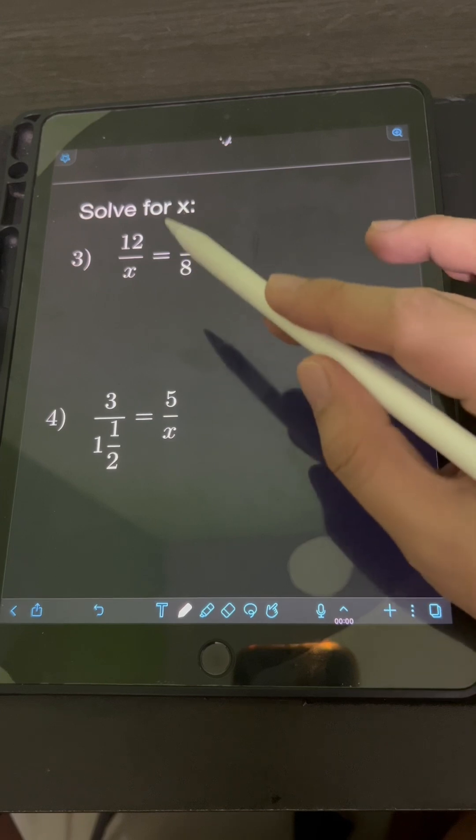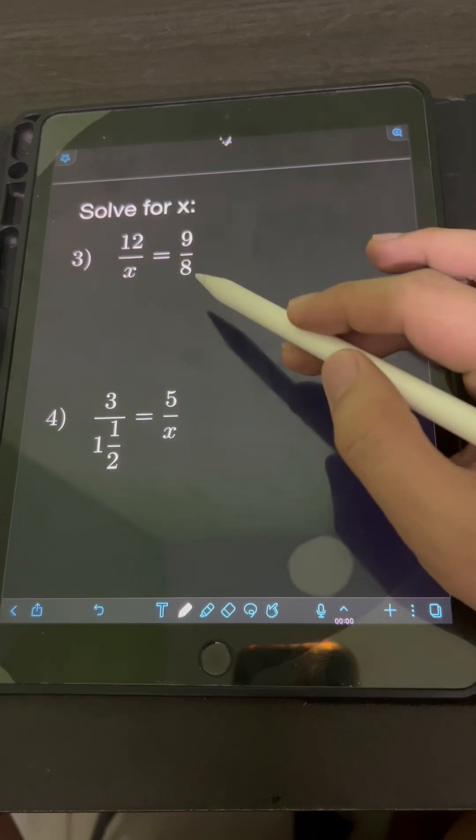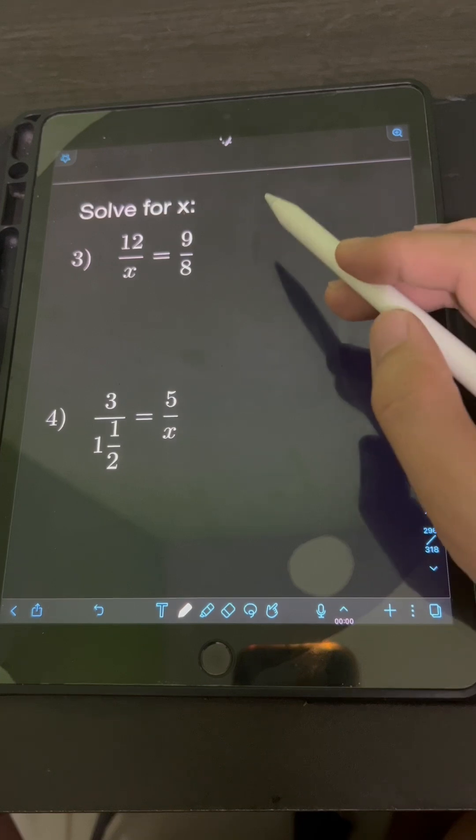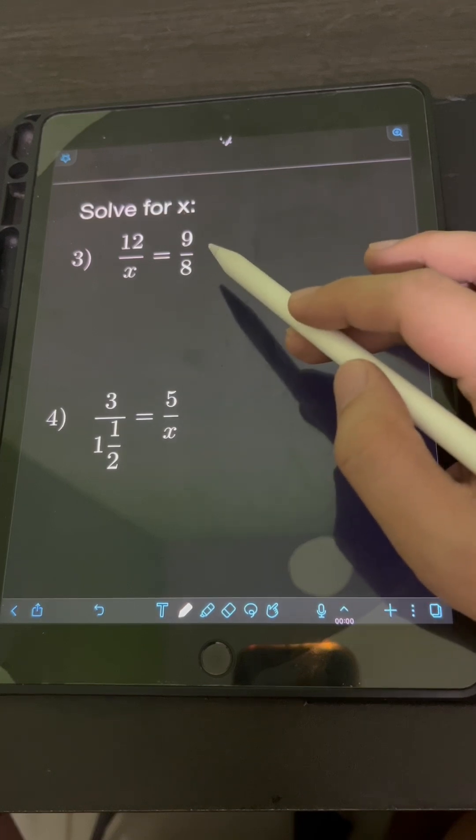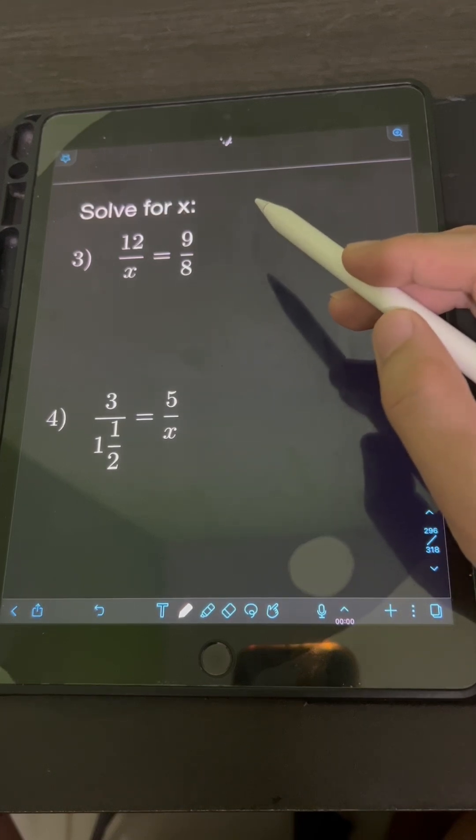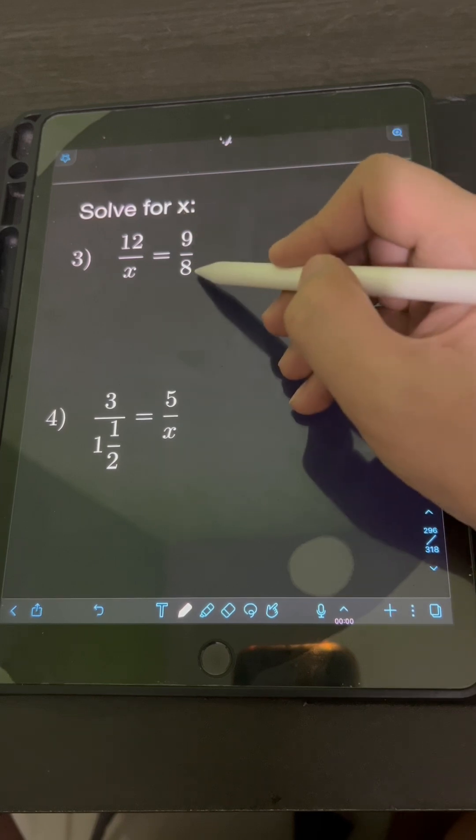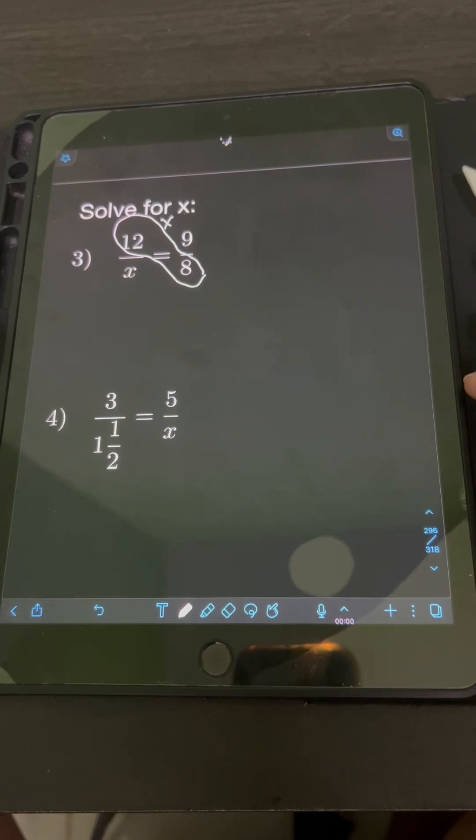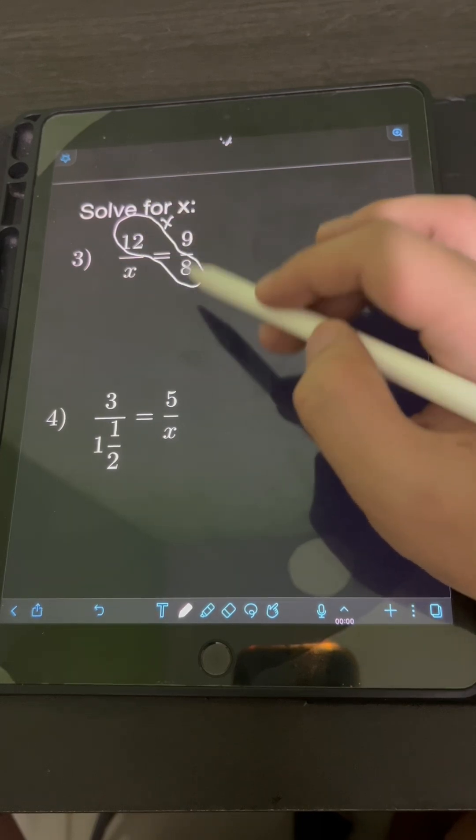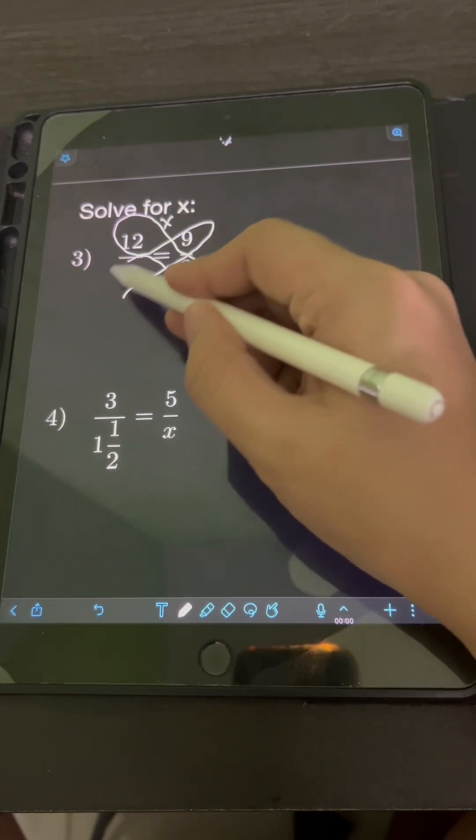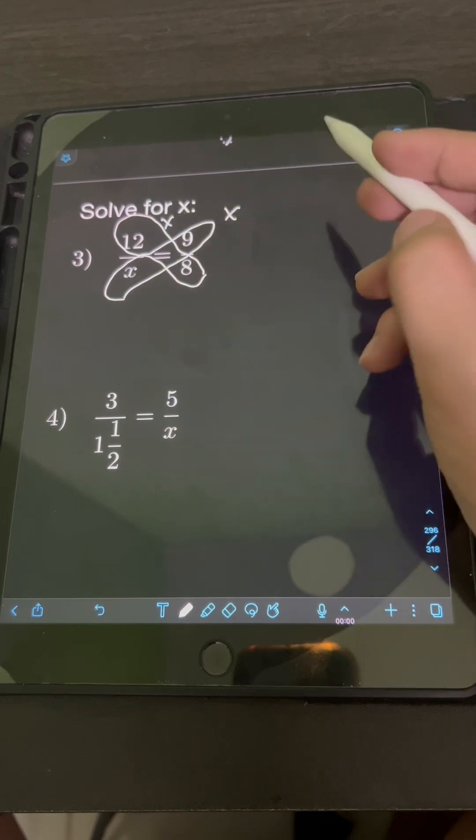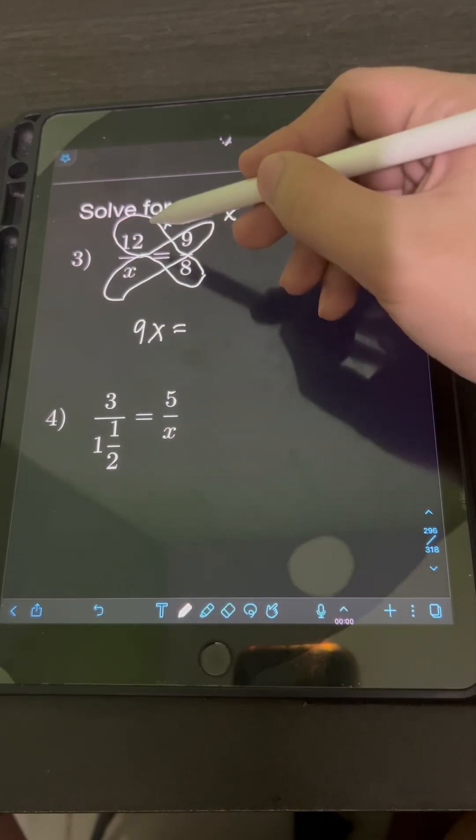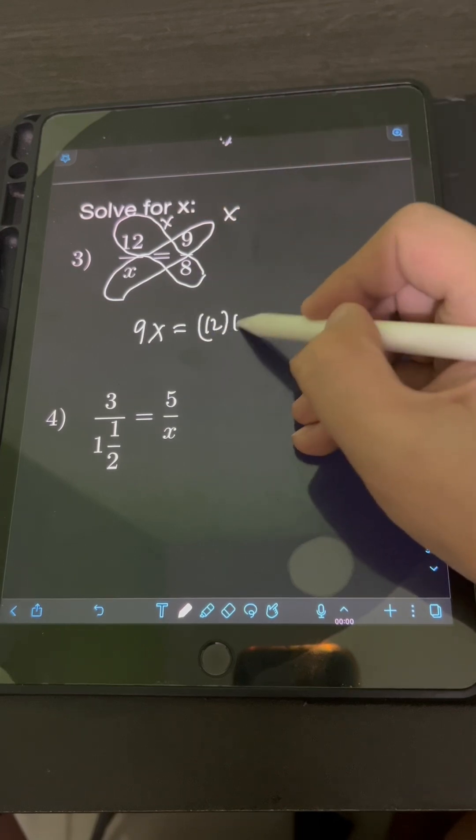For number 3, we have 12 over x is equal to 9 over 8. So this is also considered a ratio and proportion written in fraction. So this time, we just apply cross multiplication. So we equate the cross product of 12 and 8 to the cross product of 9 and x. So we have 9x is equal to 12 times 8.